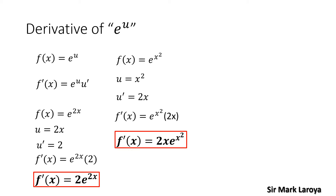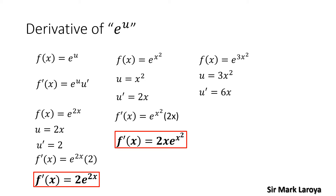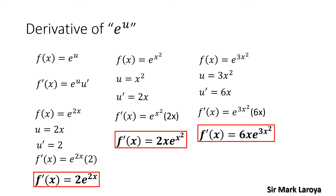For our last example for this type of function, we have f(x) = e raised to 3x squared. So the exponent of our e here is 3x squared — that is our u. First, we get the derivative of u and our u prime will be 6x. Applying the formula for the derivative of f(x) = e raised to u, this becomes f'(x) = e raised to 3x squared times 6x, or rewriting this, f'(x) = 6x times e raised to 3x squared.